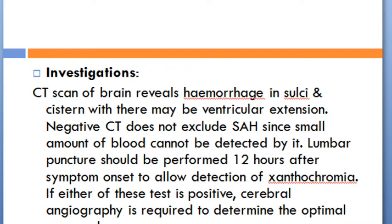On investigation, CT scan of the head may reveal hemorrhage in the sulci or cisterns, and there may be ventricular extension. A negative CT does not exclude subarachnoid hemorrhage, as small amounts of blood cannot be detected. Lumbar puncture should be performed 12 hours after symptom onset to allow detection of xanthochromia. If either test is positive, cerebral angiography is required to determine the optimal approach.